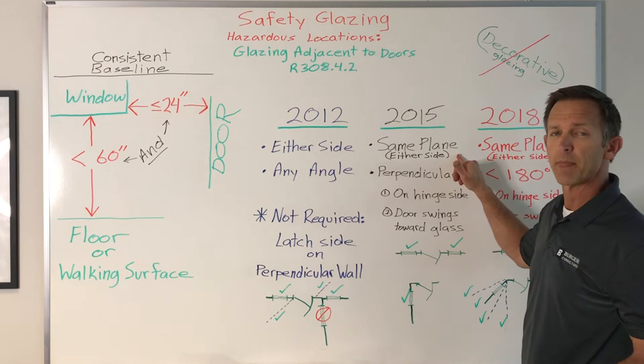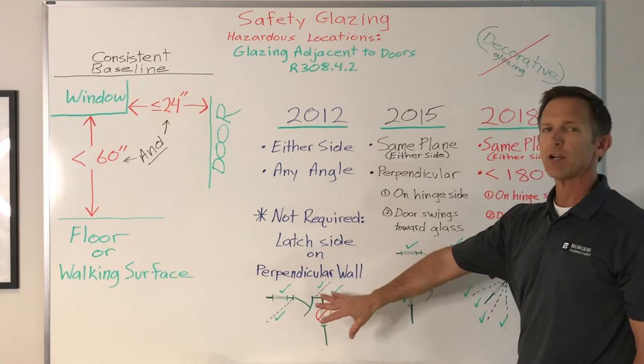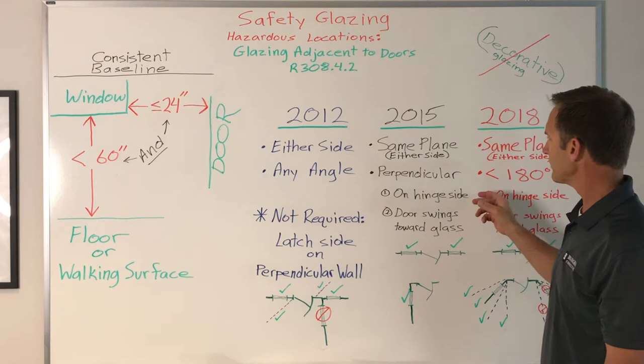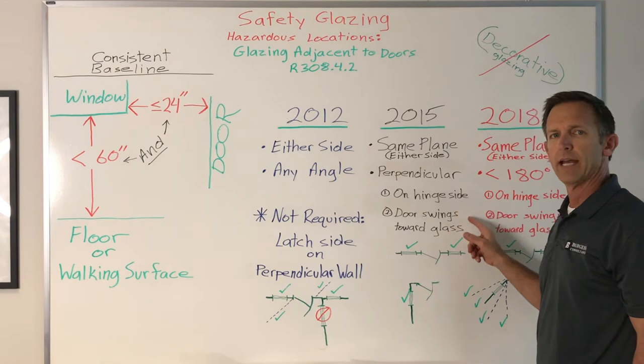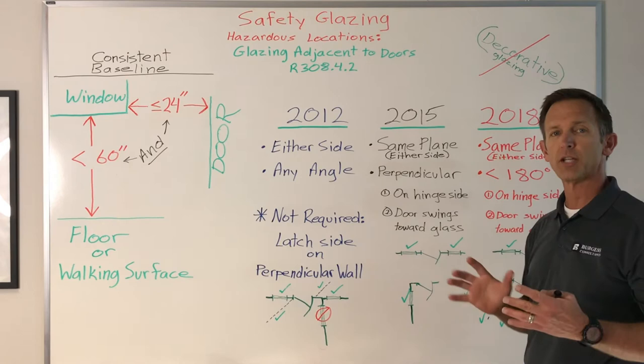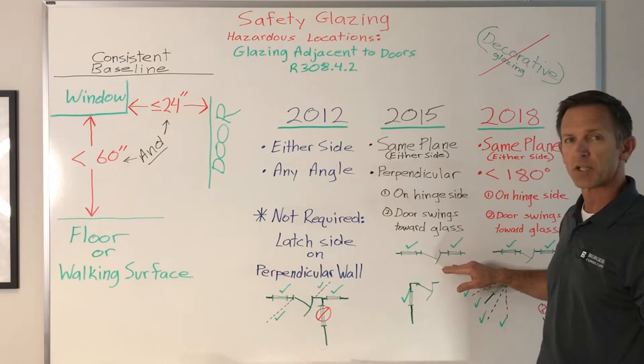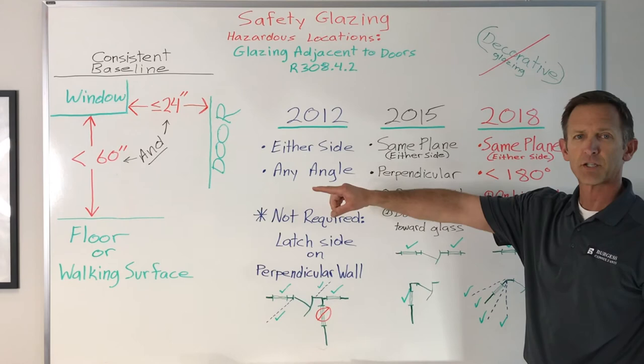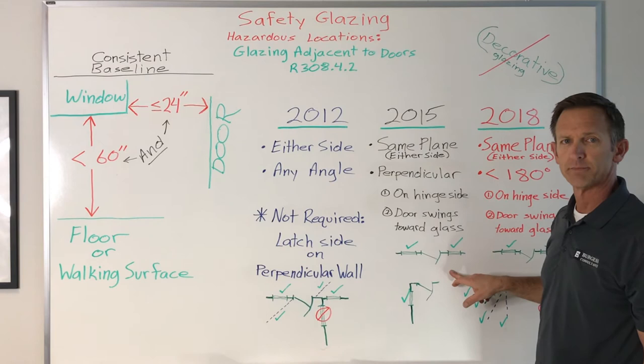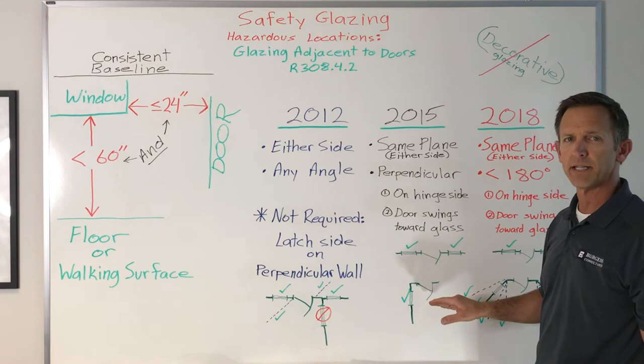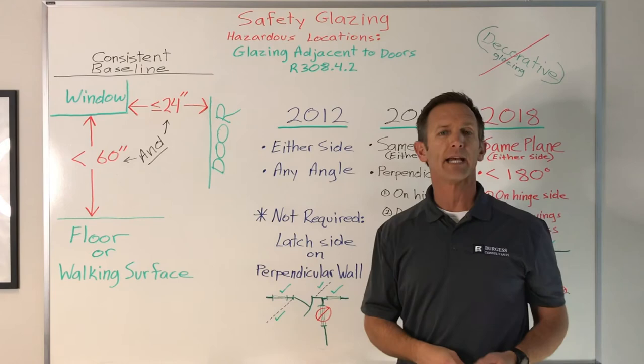Jumping to the 2015 code, same plane and either side of the door remained, but the angled wall provision was dropped — a bit of an error that gets corrected later. The 2015 code only specified the perpendicular wall scenario, and only if it's on the hinge side of the door where the door swings toward the glass. The concern is someone being pushed into the glass by someone entering from the other side. Same plane, within 60 inches from the floor and 24 inches of the door — that's still a hazardous location.